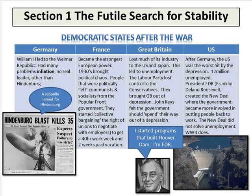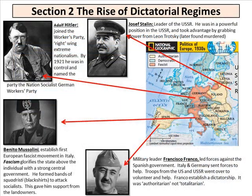The New Deal did not solve unemployment — World War II actually put people back into jobs in factories. Now in Section 2, you have a map of Europe and some of these leaders so you can identify them. Joseph Stalin was the leader of the USSR. Believe it or not, he actually killed more people in concentration camps than Hitler did, only because he lived longer. He took advantage of grabbing power from Leon Trotsky and Lenin. Hitler joined the Workers' Party — right-wing extreme nationalism — and by 1921 he was in control, naming it the National Socialist German Workers' Party: the Nazis.